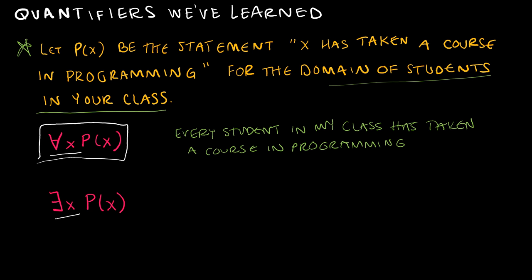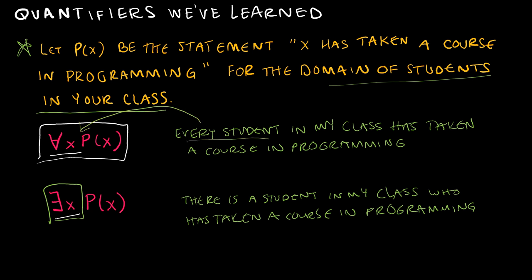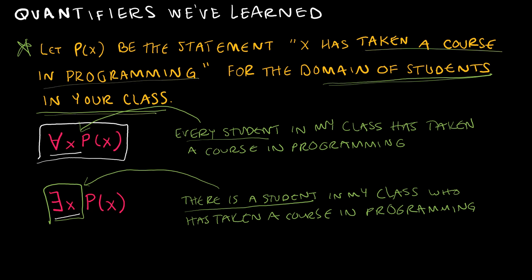Now 'there exists some x such that p(x) is true' means there is a student in my class who has taken a course in programming. So again, each of those has been translated: 'every student' corresponds to 'for all,' and 'there is a student' or 'there exists a student' corresponds to the existential quantifier, always in reference to the domain and the condition of the propositional function.